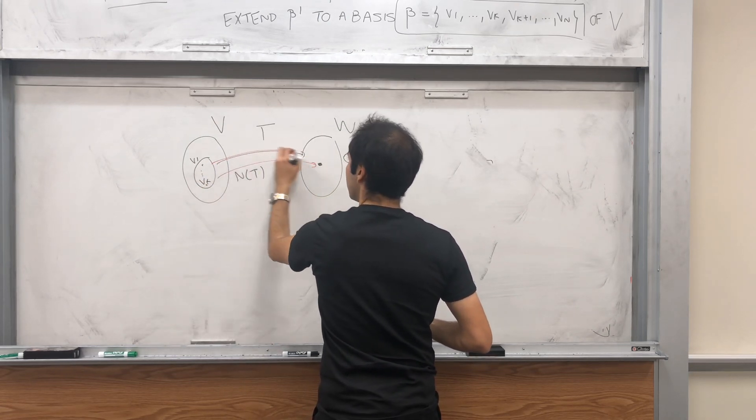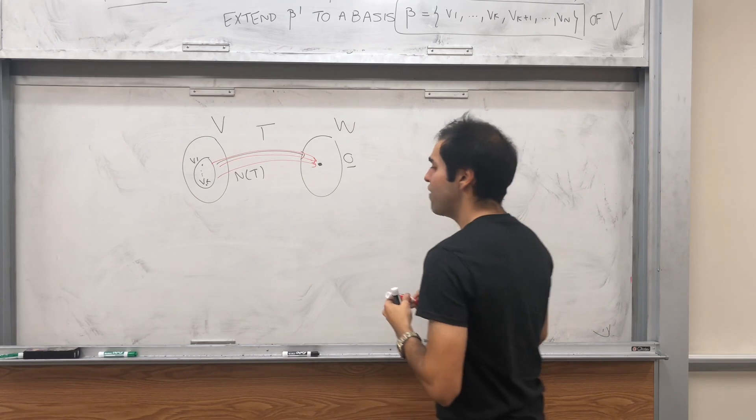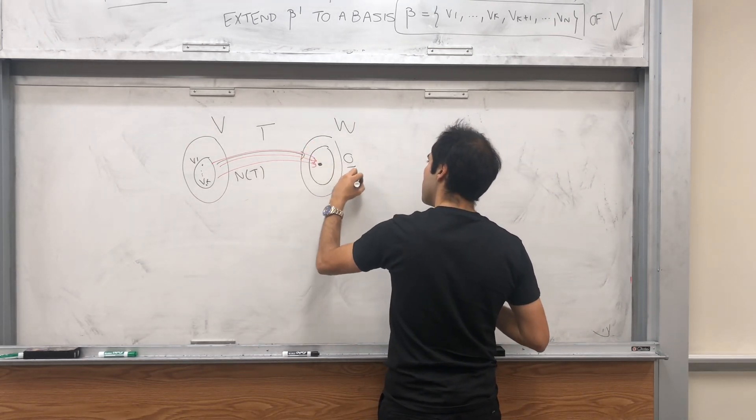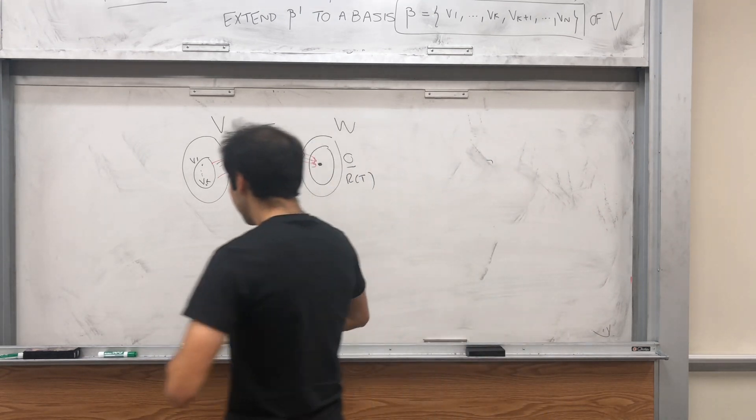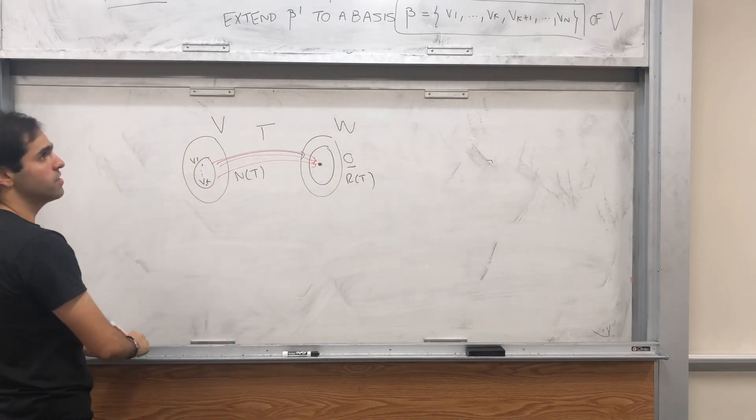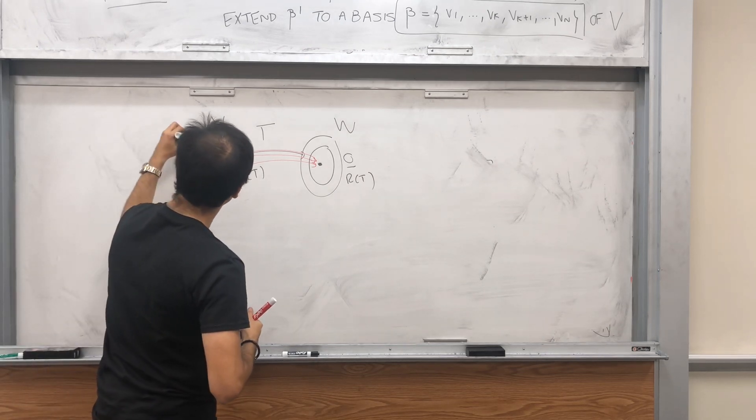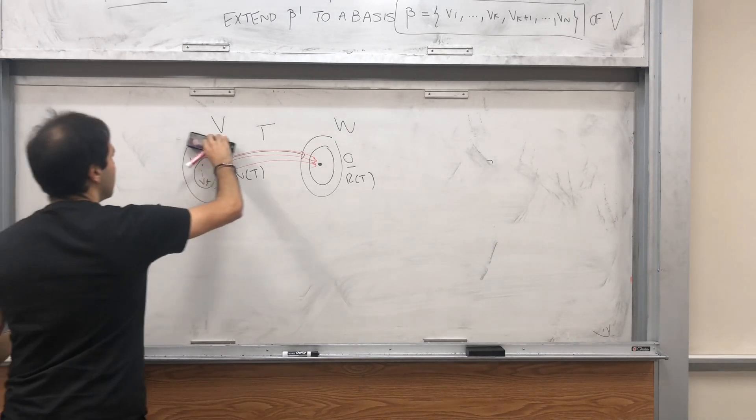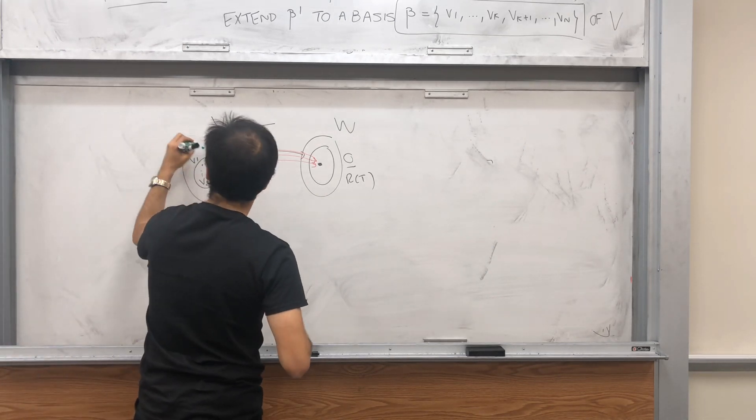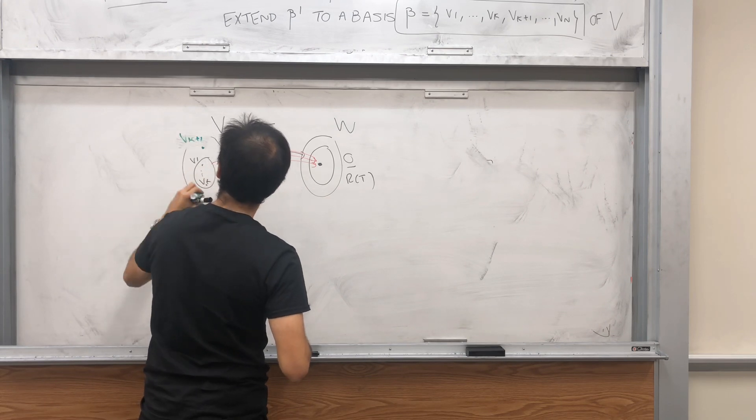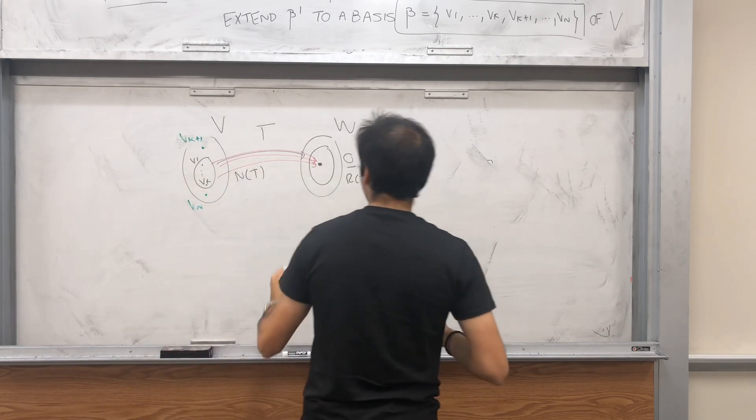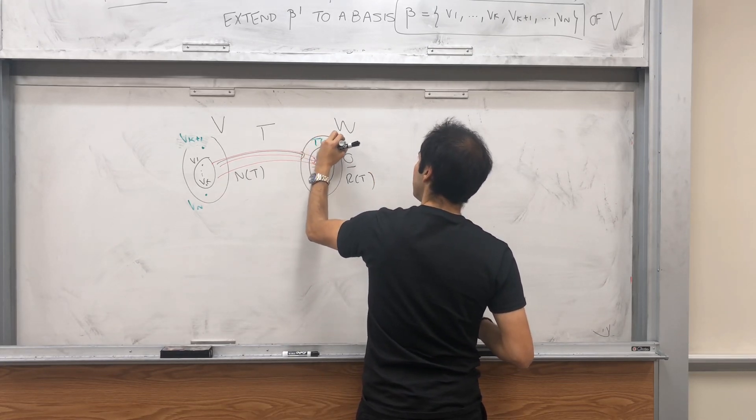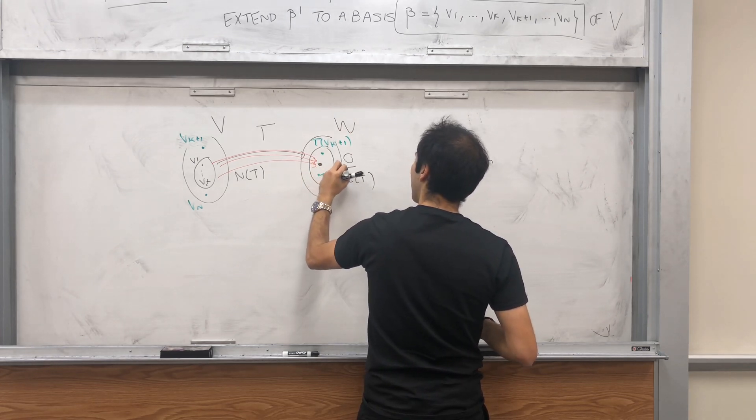And all those vectors there get sent to the zero. On the other hand, T itself has a range, which might not be all of W. And which vectors get sent to the range? Precisely all the other ones. So vk plus 1 up to vn.